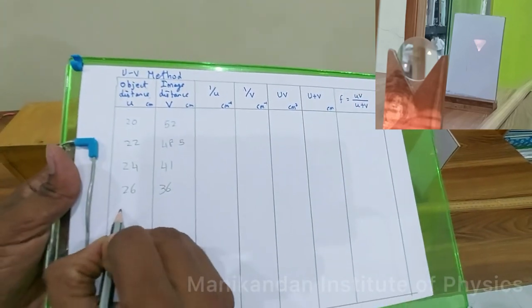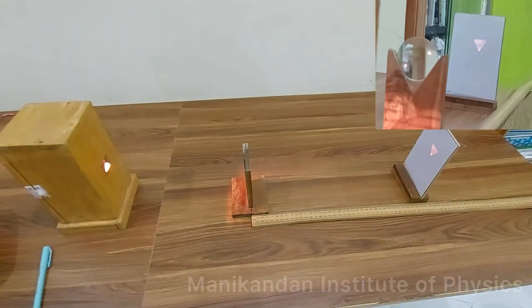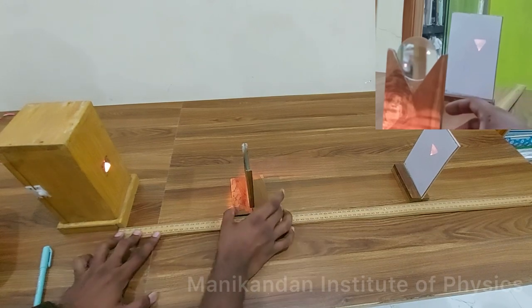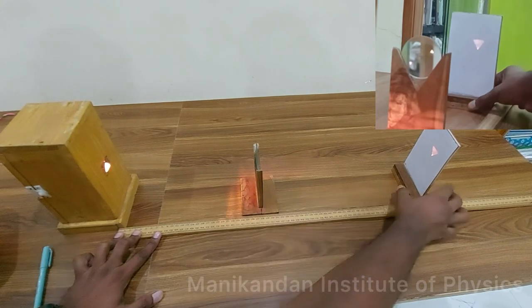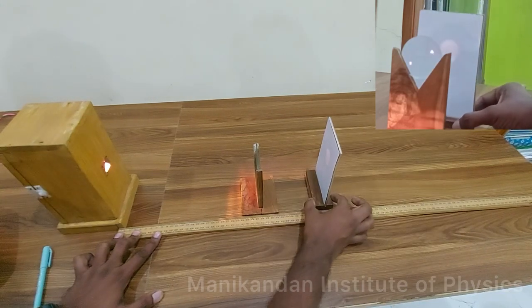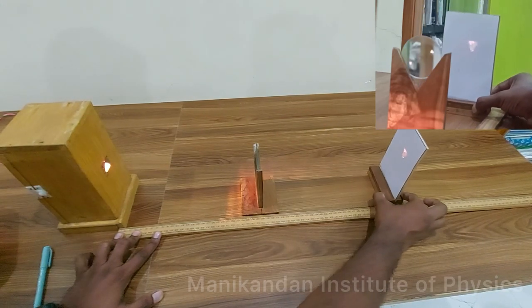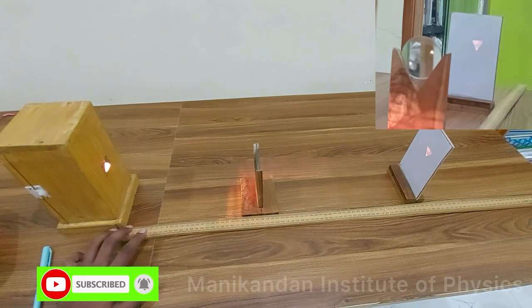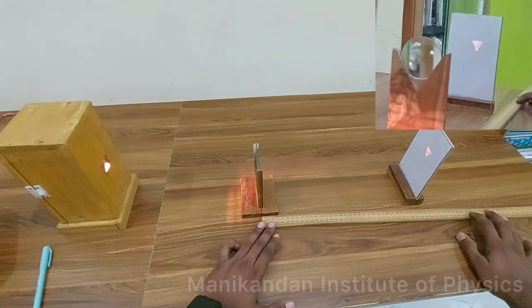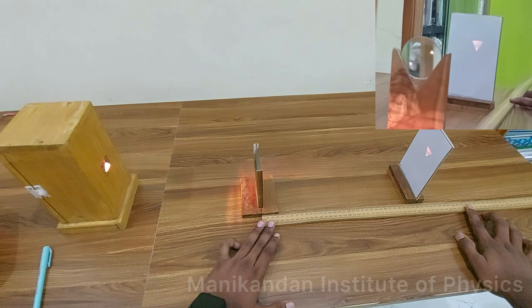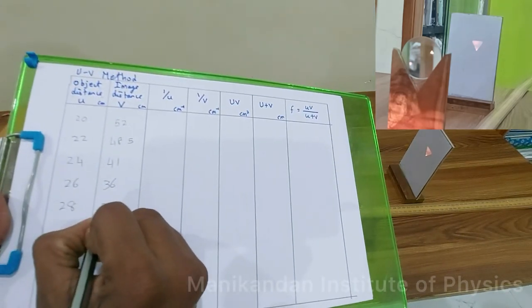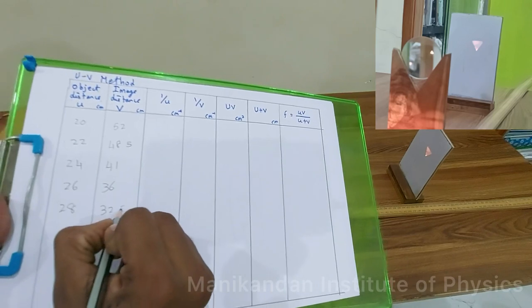I now increase the object distance to u = 28 centimeters and move the screen away from the lens. A clear image forms at a particular point. Measuring the distance from the lens to the screen gives v = 32.5 centimeters.